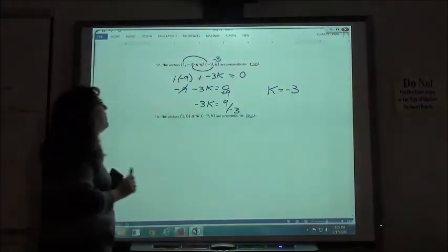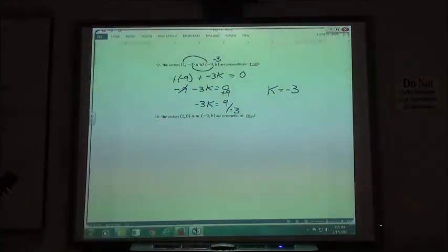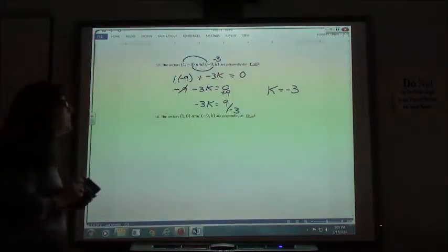So if I have the vector 1, negative 3, I'd have to also have the vector negative 9, negative 3 in order for them to be perpendicular.